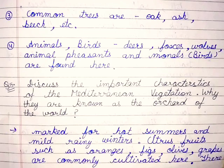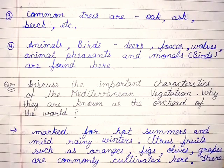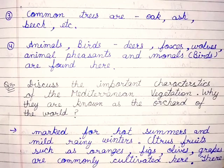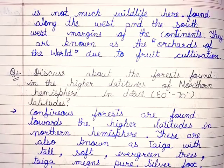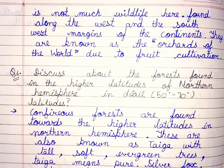Question number 5: discuss the important characteristics of the Mediterranean vegetation. Question number 6: why are they known as the orchards of the world? Answer: Mediterranean vegetation is marked by hot summers and mild rainy winters. Citrus fruits such as oranges, figs, olives, and grapes are commonly cultivated here. There is not much wildlife here. It is found along the west and southwest margins of the continent. They are known as the orchards of the world due to fruit cultivation.